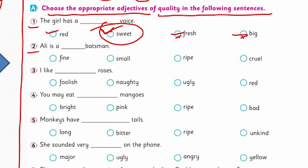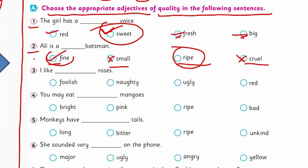The second one: 'Ali is a ___ batsman.' Options are fine, small, ripe, or cruel. 'Ripe' is used for fruit or vegetables. 'Cruel' means zalim — no. 'Small' could be an option, but between bad and fine batsman, we have 'fine' here. So fine is the right option — it is the quality of the noun Ali, that he is a fine batsman.